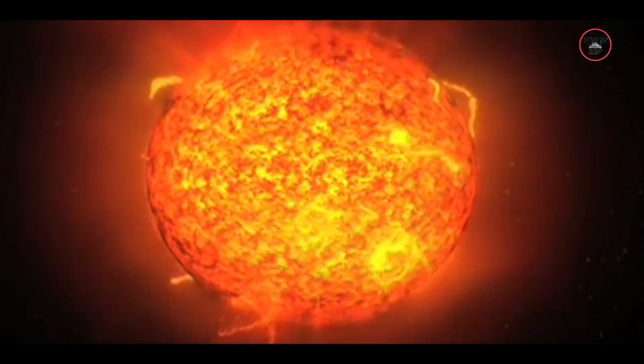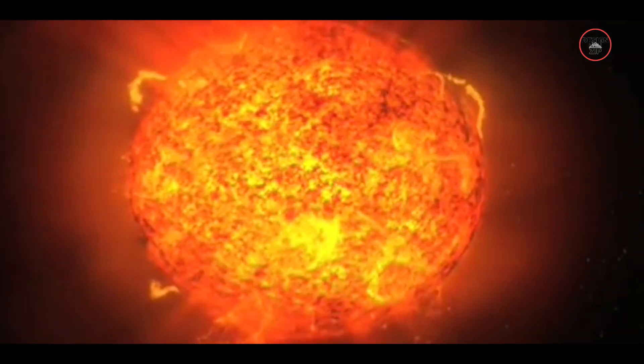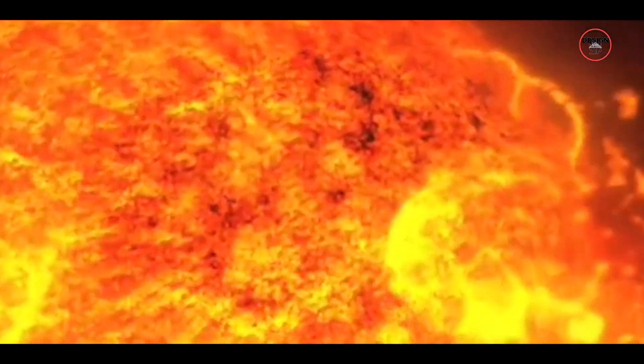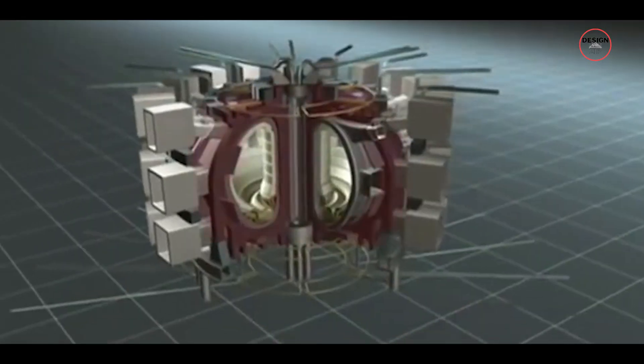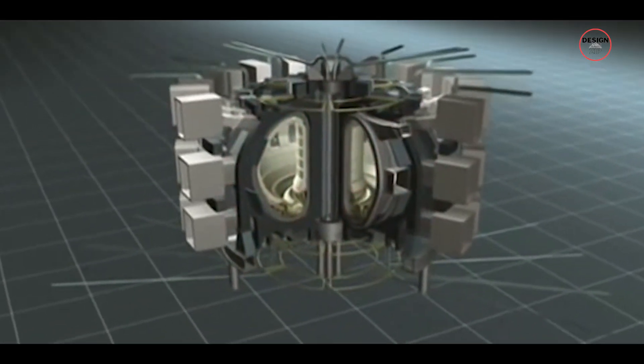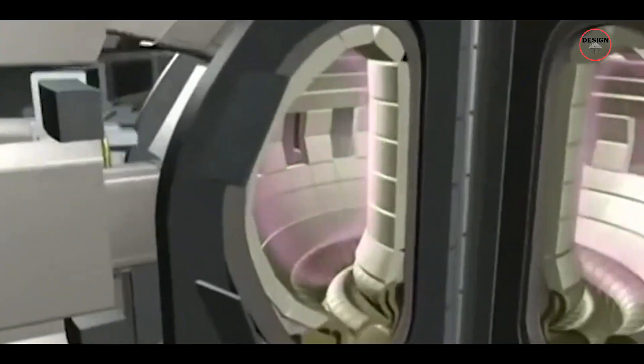For example, the sun's core reaches about 15 million degrees Celsius, and has pressures 340 billion times the air pressure at sea level on Earth. Heating the plasma to these temperatures is the easy part. The tough part is containing it, so it does not burn through the reactor or disrupt the fusion process.